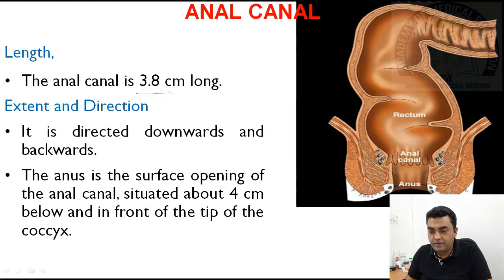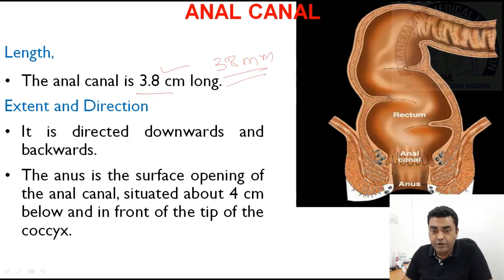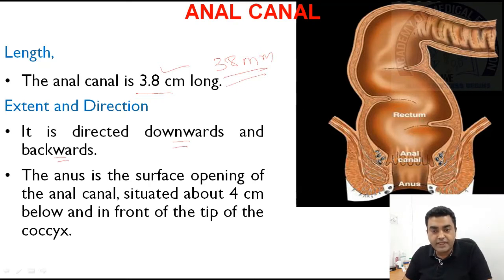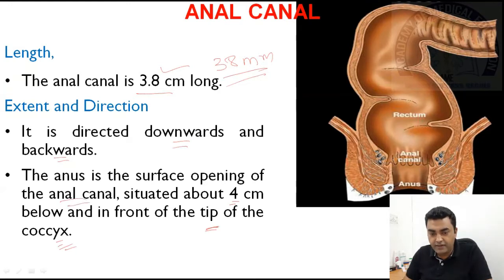The length of the anal canal is 3.8 centimetres or 38 millimetres long. Its extent and direction: it is directed downwards and backwards. The anus is the surface opening of the anal canal, situated about 4 centimetres below and in front of the tip of the coccyx vertebrae. That opening of the anal canal is called the anus.